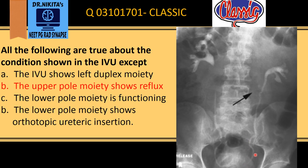The lower pole moiety ureter is inserting normally into the bladder. Looking at the options: the IVU shows left duplex moiety — the upper pole moiety shows reflux is incorrect, because the upper pole moiety shows ureterocele and obstruction, while the lower pole moiety shows reflux. The lower pole moiety is functioning — that is true. The lower pole moiety shows orthotopic, i.e., normal ureteric insertion — that is also true. So the answer is option B: the upper pole moiety shows reflux is false.